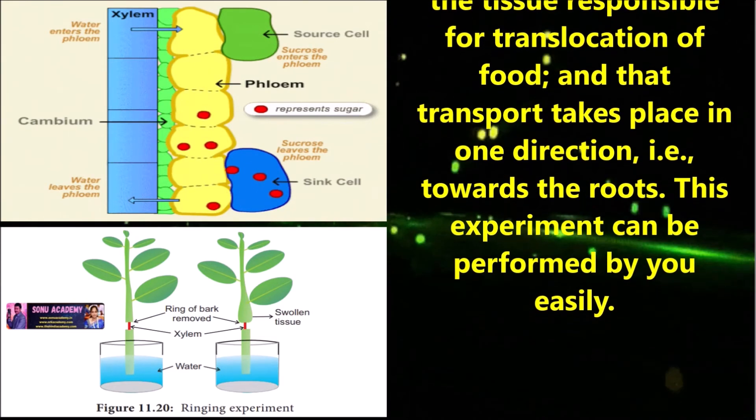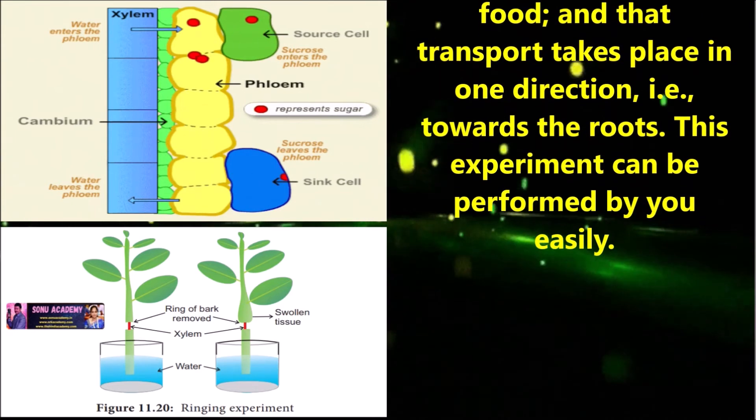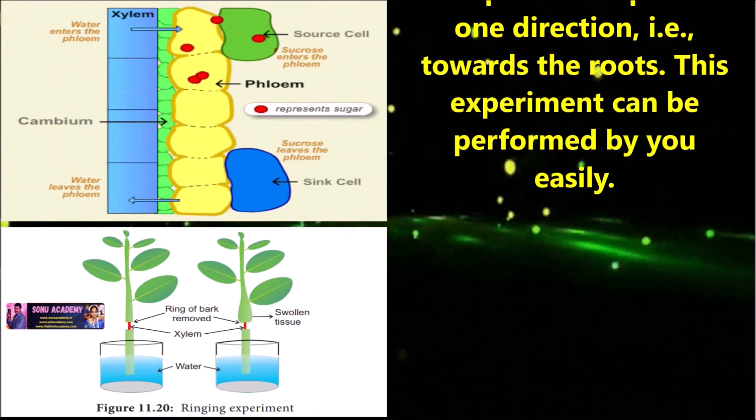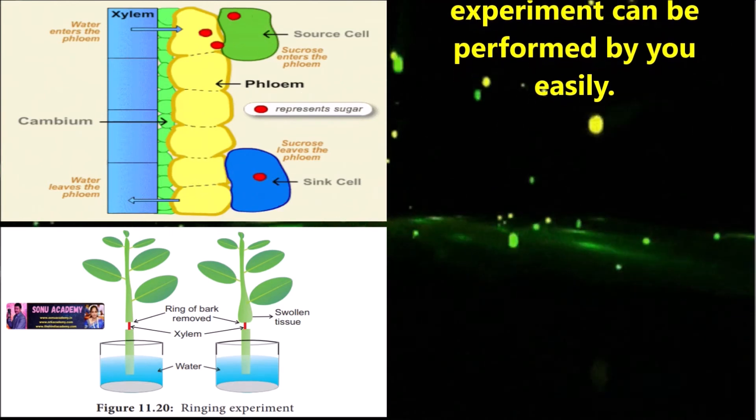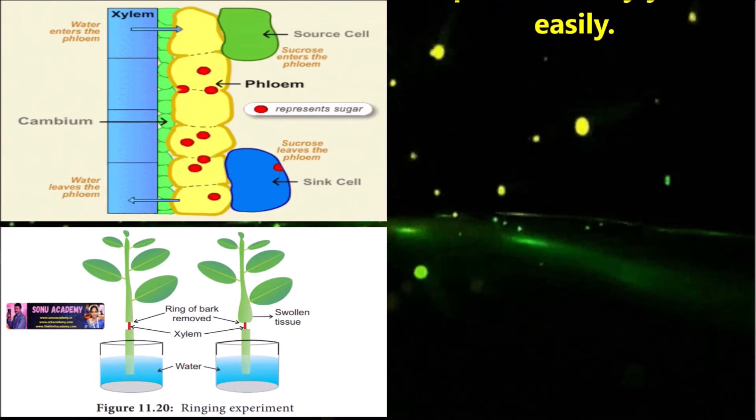This simple experiment shows that phloem is the tissue responsible for translocation of food and that transport takes place in one direction, i.e. towards the roots. This experiment can be performed by you easily.